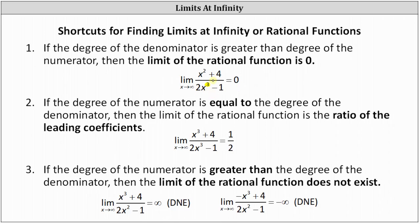Case two: if the degree of the numerator equals the degree of the denominator, then the limit of the rational function is the ratio of the leading coefficients. For example, if the degree of both numerator and denominator are three, then the limit as x approaches infinity equals the ratio of the leading coefficients — in this case, one divided by two, or one-half.